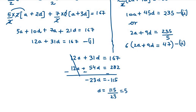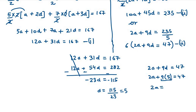Now we need to find a, since we need to find the sum of the first 20 terms. Using equation two: 2a + 9d = 47. Substituting d = 5: 2a + 45 = 47, so 2a = 2, giving a = 1. We now have a = 1 and d = 5.